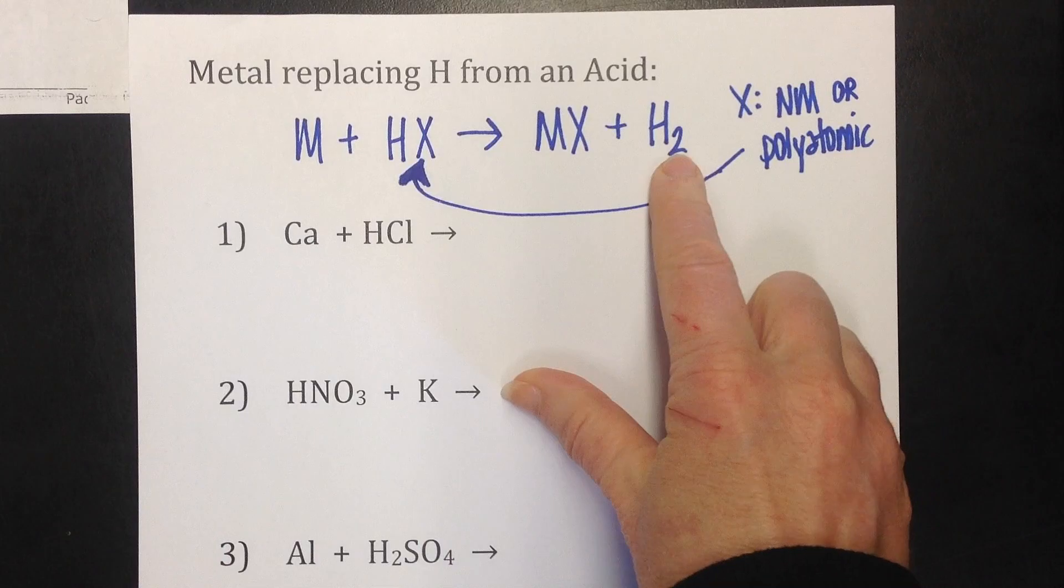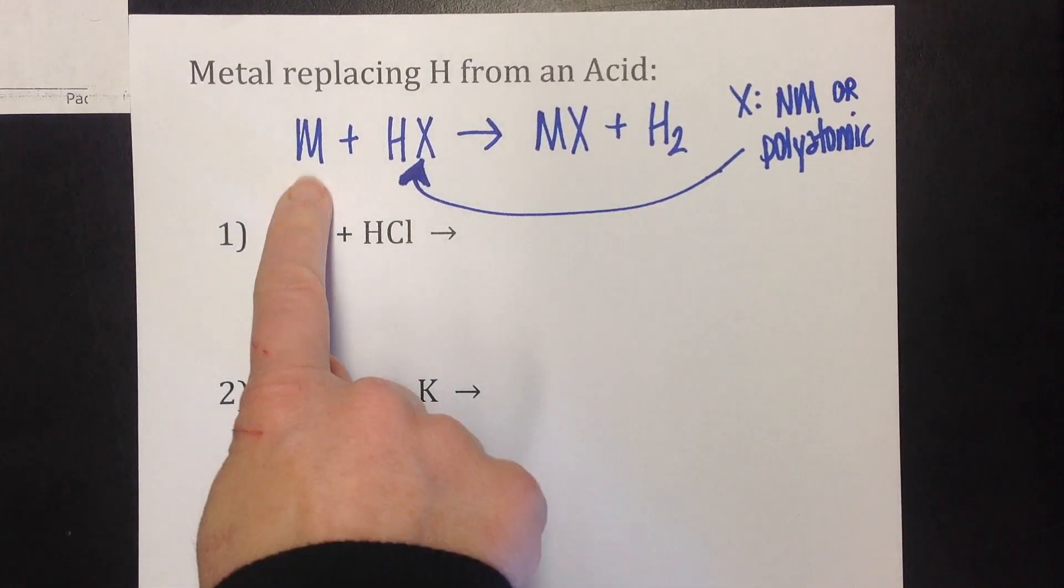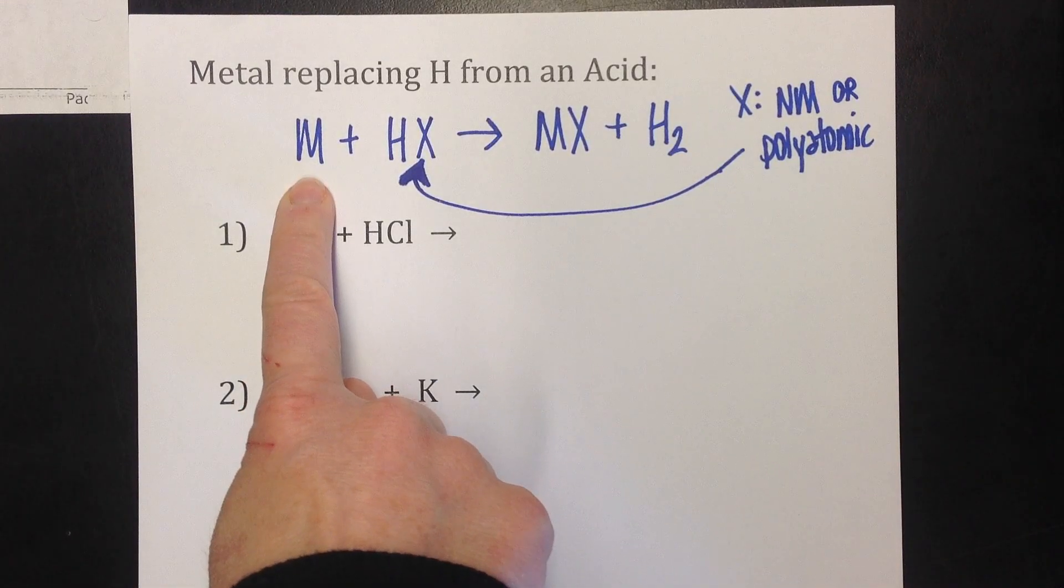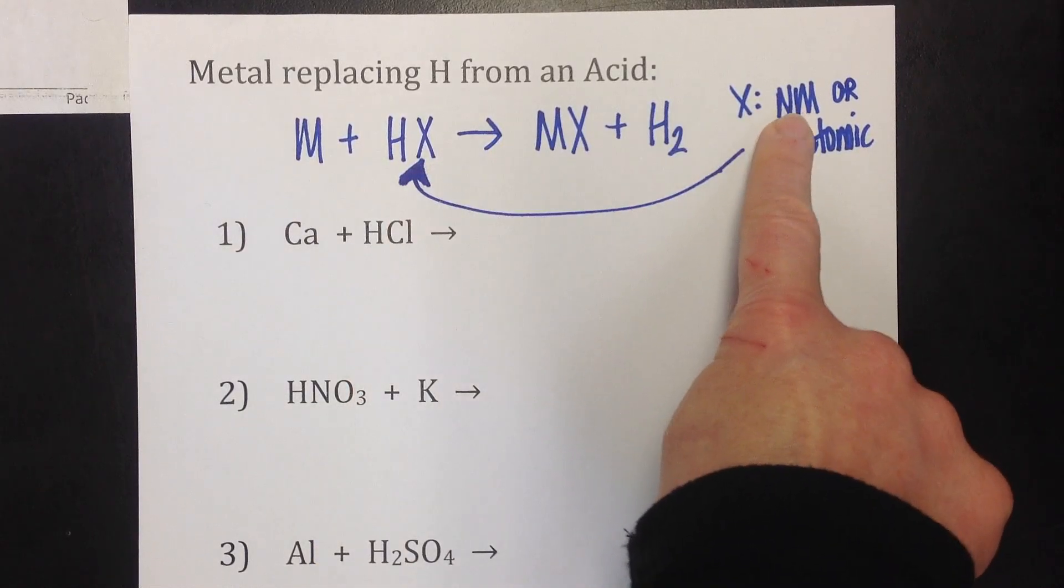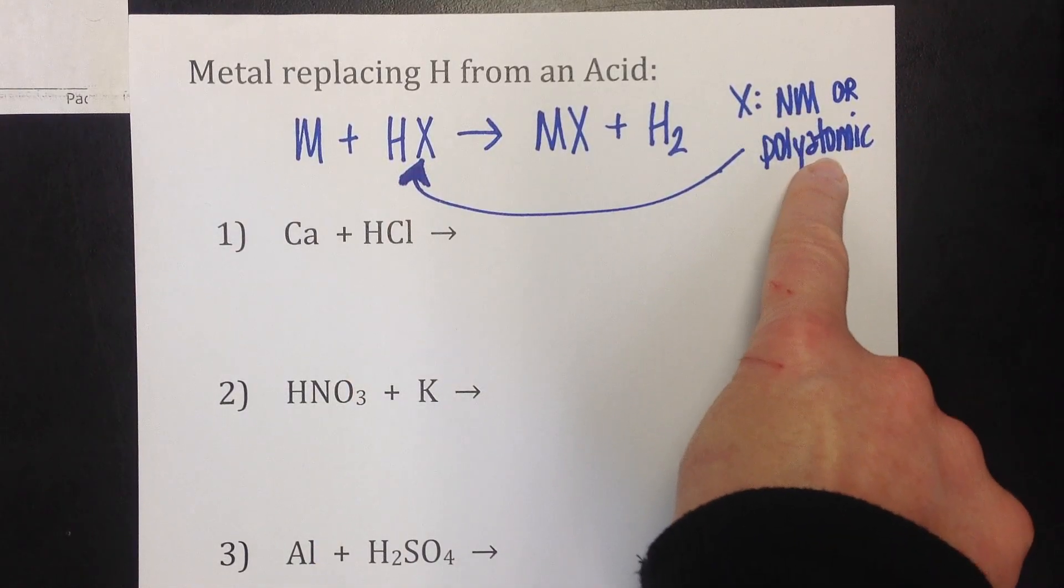It's not going to be just hydrogen. You're going to have to have a two there. And then the metal is going to combine with this X. Now this X is either going to be a non-metal or a polyatomic ion.